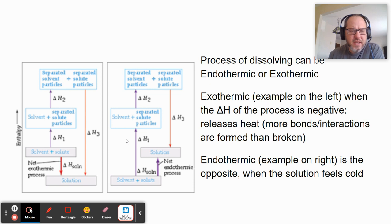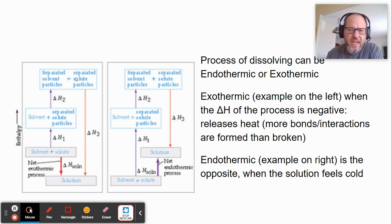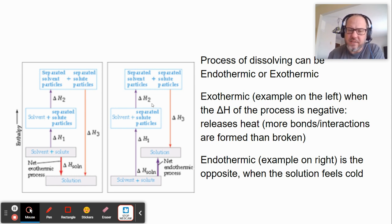In an endothermic process, you have the same steps — you have your solvent and your solute, you've got to separate them and then bring them together. But when you bring them together, you don't gain as much energy as you had to put in to separate those particles. And so this is an endothermic solution process. Most solution processes are exothermic, because that process of bringing those separated solvent particles and separated solute particles together most often releases more energy than you had to put in. But if that process does not release as much energy as you had to put in, then it is an endothermic process.